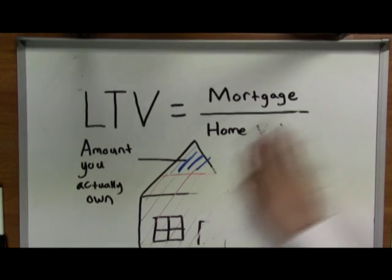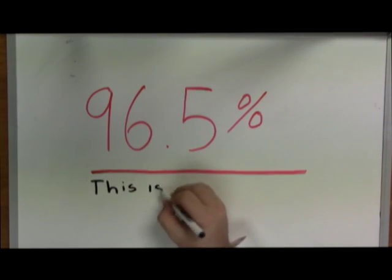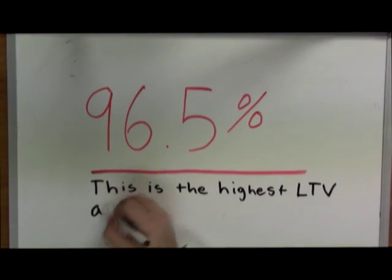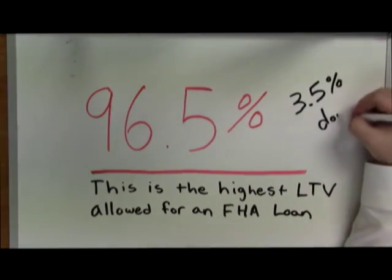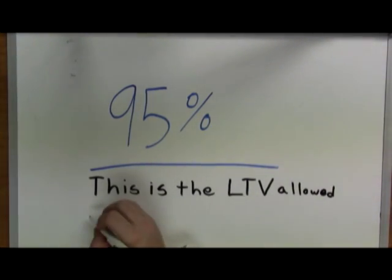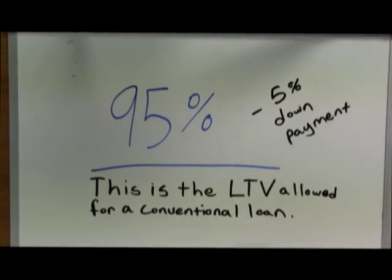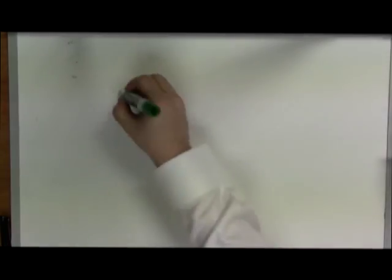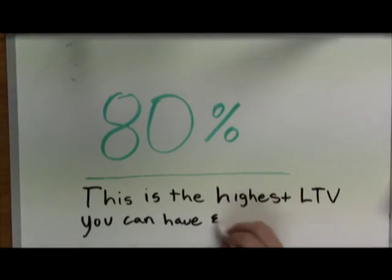But if you're going to purchase a home, here are some key LTV figures to be aware of. 96.5% — this is the highest LTV allowed for an FHA loan, meaning you come in with a down payment of 3.5%. 95% — this is the LTV allowed for a conventional loan, unless you want to pay a lot of mortgage insurance, meaning you come in with 5%. 80% — this is the highest LTV you can have and not pay mortgage insurance.